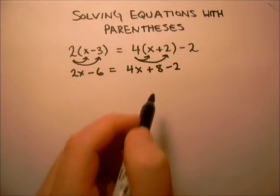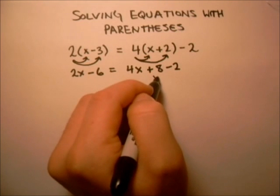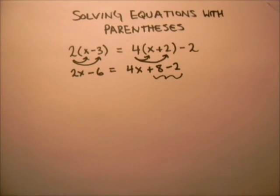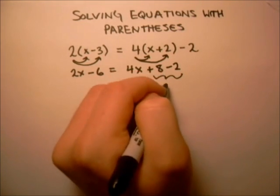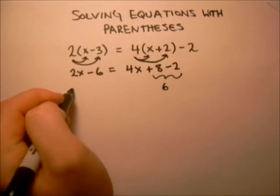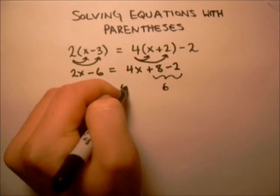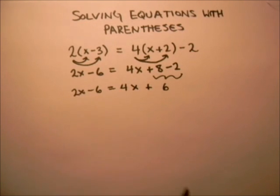Next thing is we're going to want to combine like terms. So here we have an 8 minus 2, that becomes a 6. And so we have 2x minus 6 equals 4x plus 6.